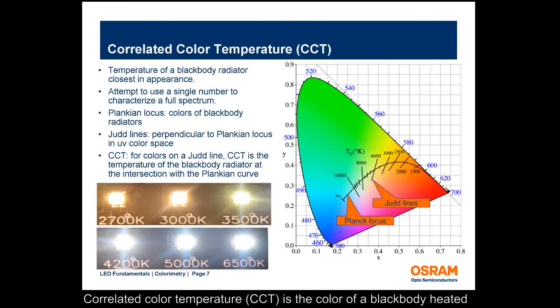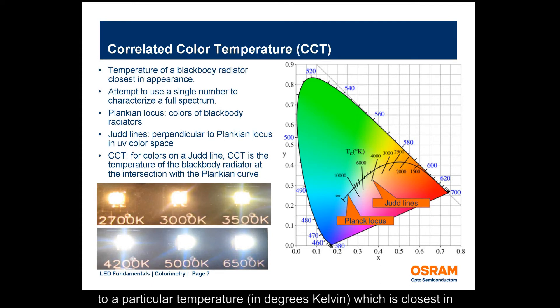Correlated color temperature, or CCT, is the color of a blackbody heated to a particular temperature in degrees Kelvin, which is closest in appearance to the LED color. In the figure, the Planckian locus and several Judd lines have been overlaid on the CIE chart. Note that the CCT value is valid only for colors near the Planck locus.